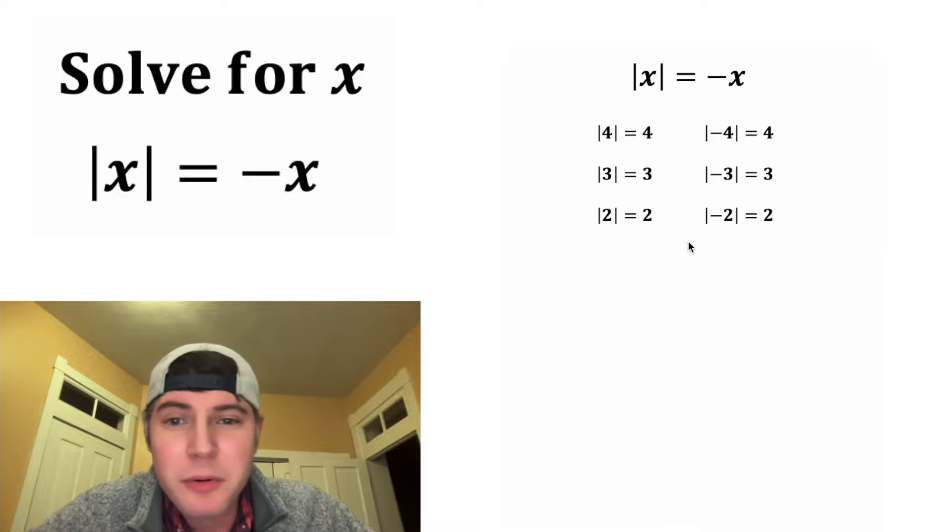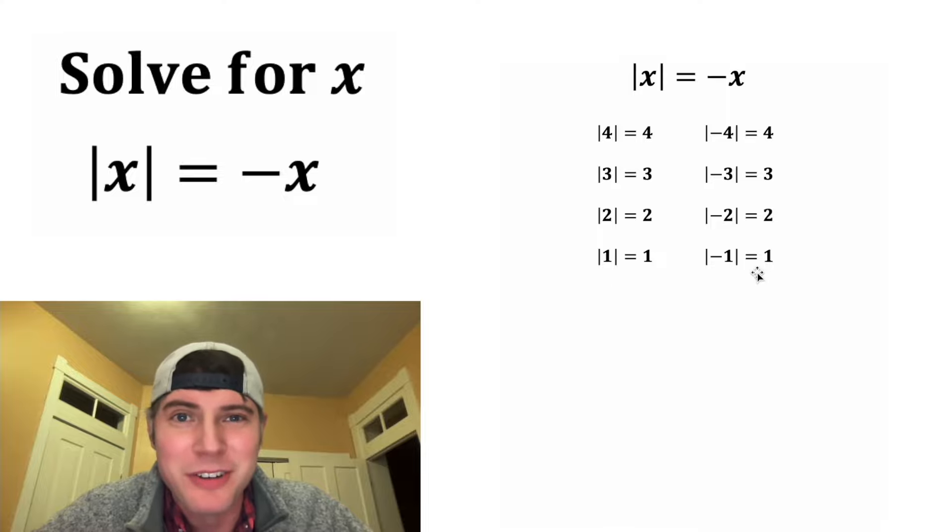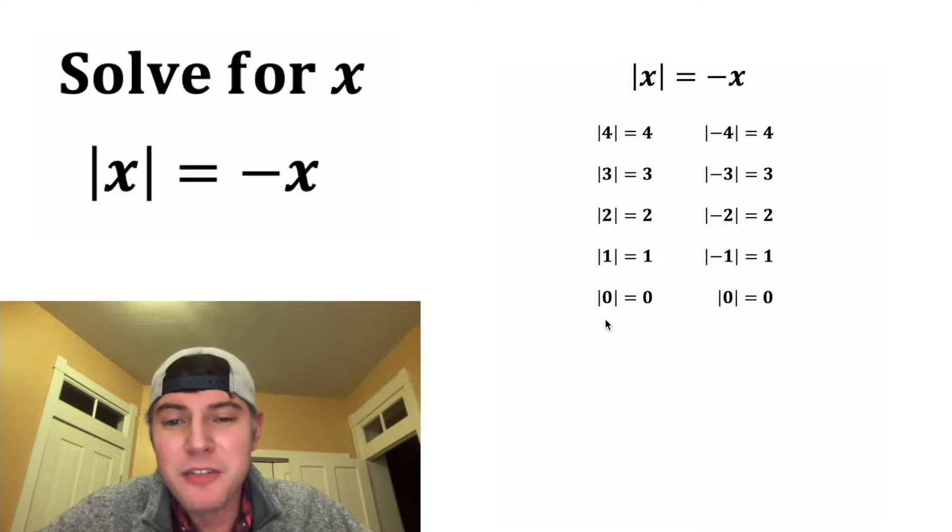Same thing happens with three and negative three, or two and negative two, and one or negative one. The absolute value will always be equal to a positive number. And if we do something like absolute value of zero, we would get zero and that would work.